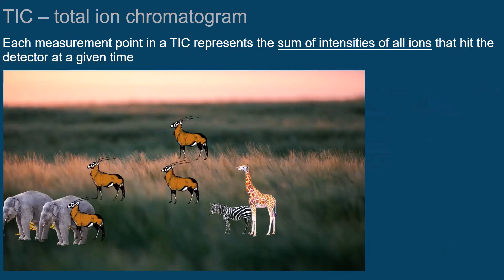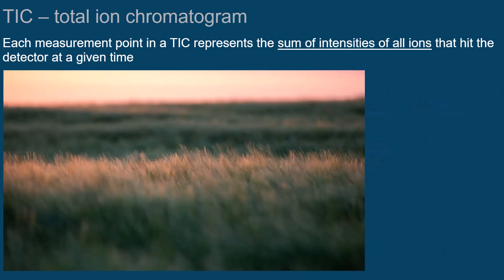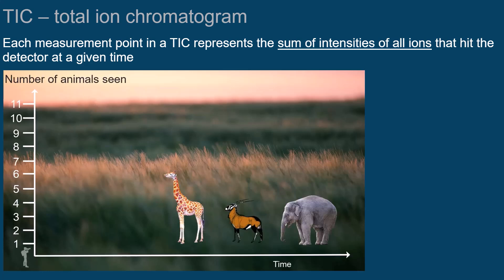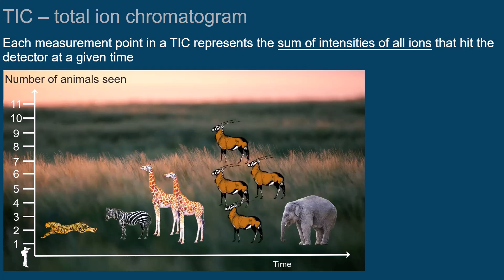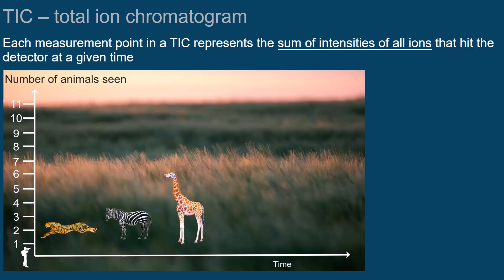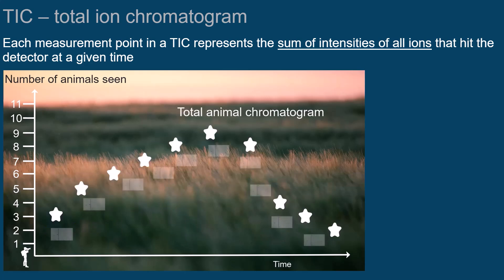imagine watching animals running across a meadow. Because the animals are very fast and also very many, you take one photo after the other, then count the animals on it, and plot their number. No matter which animals are in the photo, each photo would represent one scan of the mass spectrometer.